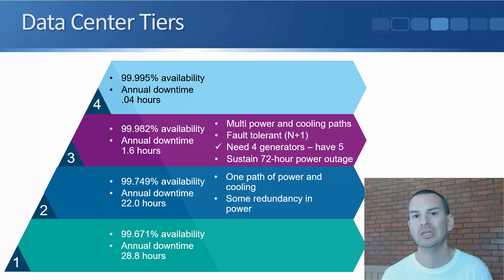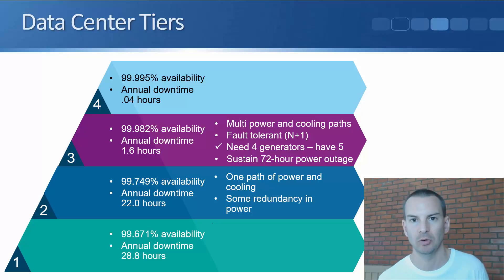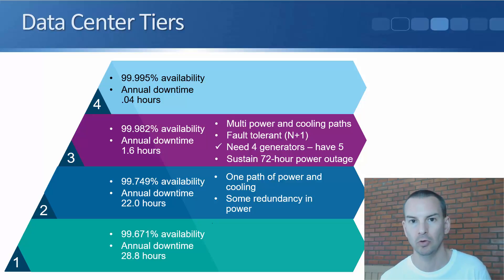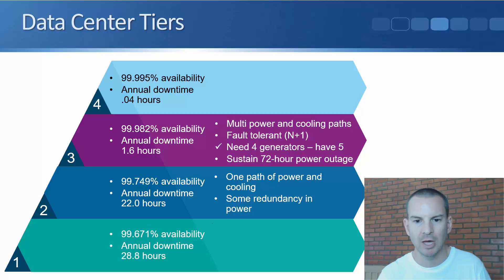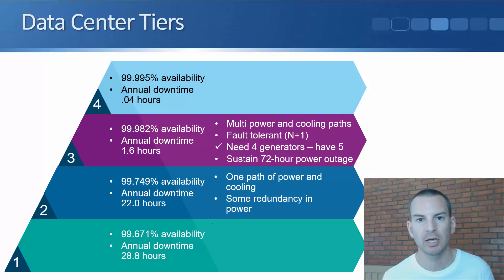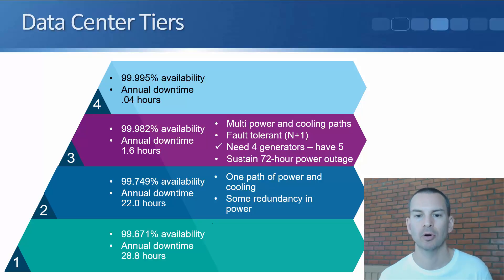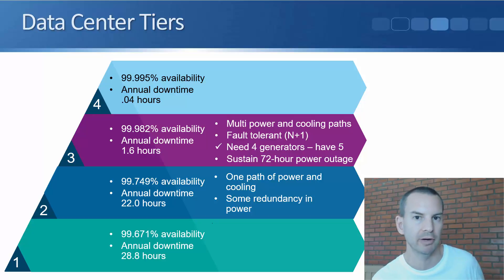Starting at the bottom, a tier one data center is expected to have 99.671% availability, equating to an annual downtime of 28.8 hours, with no requirements for redundancy. A tier two data center requires more availability — only 22 hours of annual downtime — with one path of power and cooling but some redundancy for power components. Moving up, a tier three data center has an annual downtime of only 1.6 hours, requires multiple power and cooling paths, and must support N+1 fault tolerance — for example, if you need four generators, you put in five.